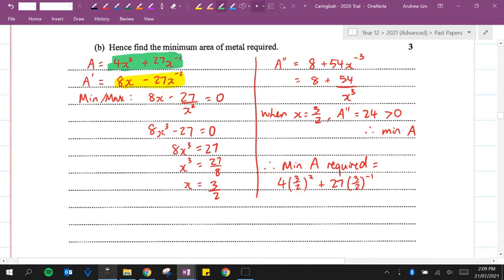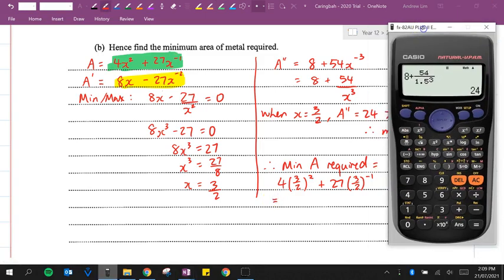So that's what the equation for the area is. Alright, let's put that in our calculators. I'm just going to write 3 over 2 equals. Alright, so we've got 4, answer squared plus 27, answer to the power of minus 1. 27.